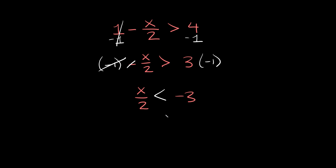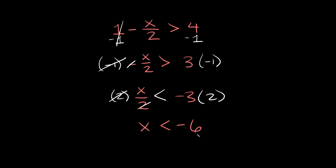Now the last thing we have to do is get rid of this 2, and we can do that by multiplying both sides by 2. Those cancel out and we're simply left with x is less than negative 3 times 2, which is equal to negative 6. So x is less than negative 6 — there's your answer.